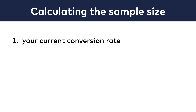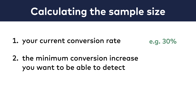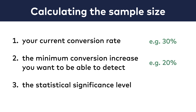Your current conversion rate — let's say I'm testing an email subject line for one of my newsletters and I use the open rate as my conversion metric. In this case, for me this is around 30%. The minimum conversion increase you want to be able to detect — let's say we expect at least a 20% conversion increase. And the minimum statistical significance level you choose — I recommend at least 95%, but I usually use 99%. Lucky for us, we don't have to do the calculations ourselves; we just have to use an online calculator.